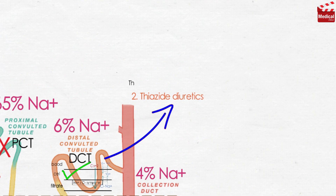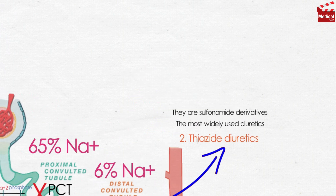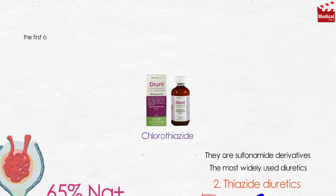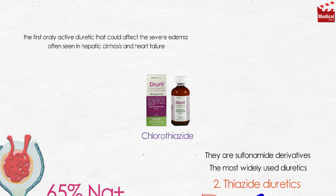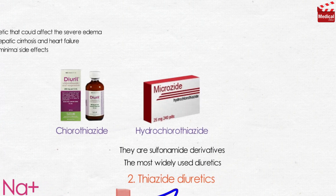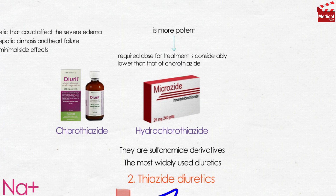The thiazides are the most widely used diuretics. They are sulfonamide derivatives, such as chlorothiazide, which was the first orally active diuretic that could affect the severe edema often seen in hepatic cirrhosis and heart failure, with minimal side effects. Hydrochlorothiazide is more potent, so the required dose for treatment is lower than that of chlorothiazide.